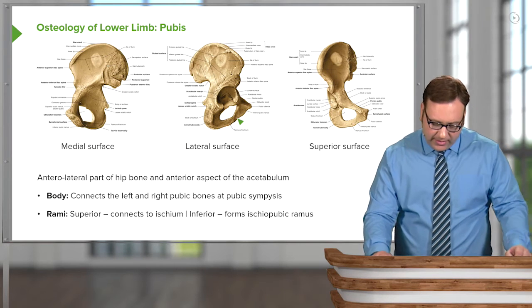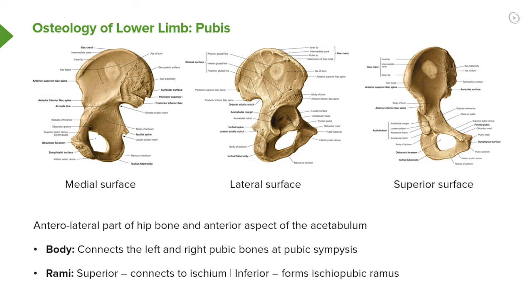The body of the pubis connects the left and right pubic bones at the pubic symphysis. Looking at the superior surface, we can see the body of the pubis running along to the body of the pubis on the other pubic bone. These unite at the pubic symphysis. On the medial surface, we pass towards the symphysial surface where the pubic symphysis will be located.